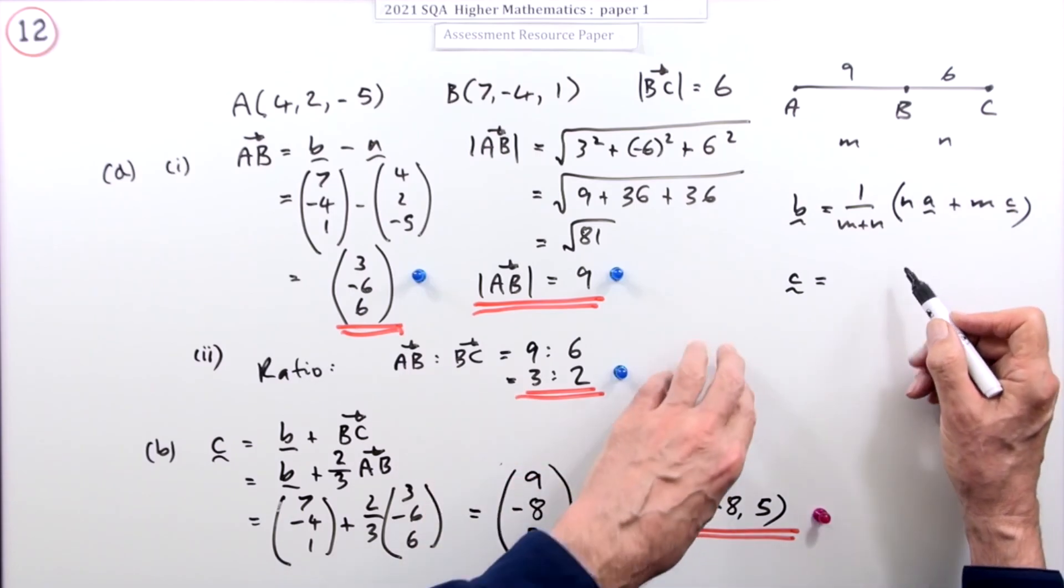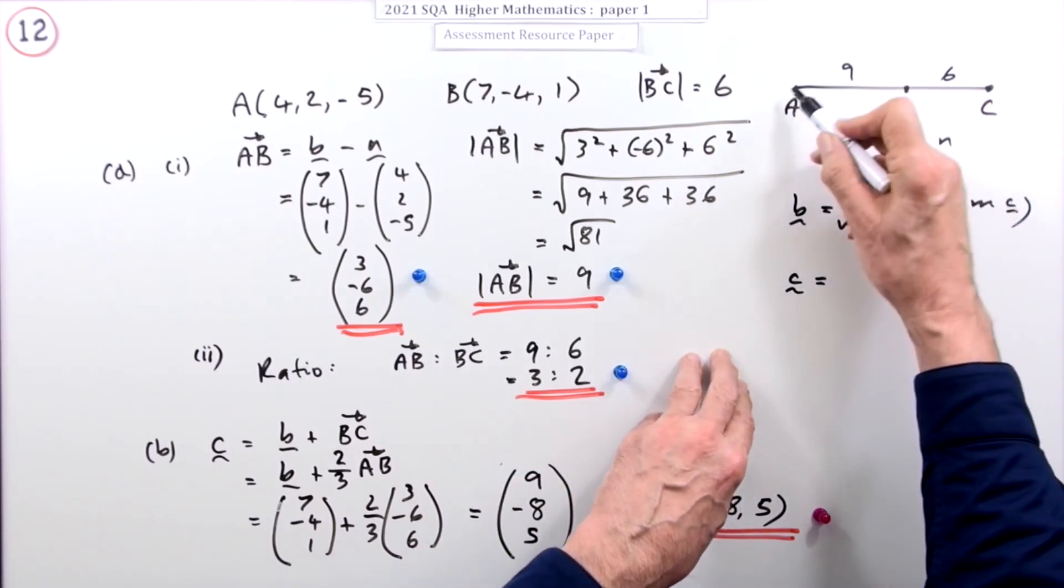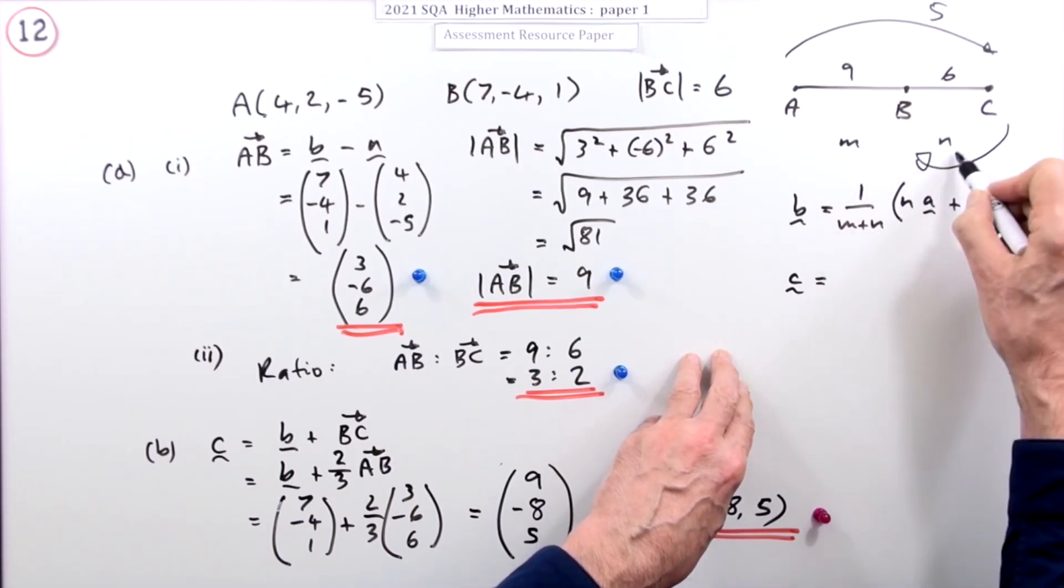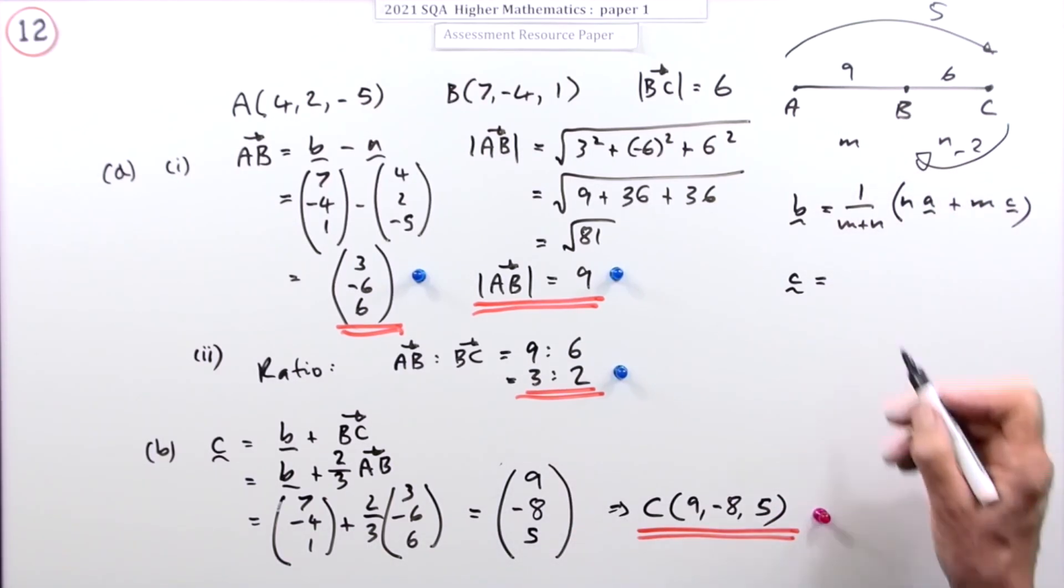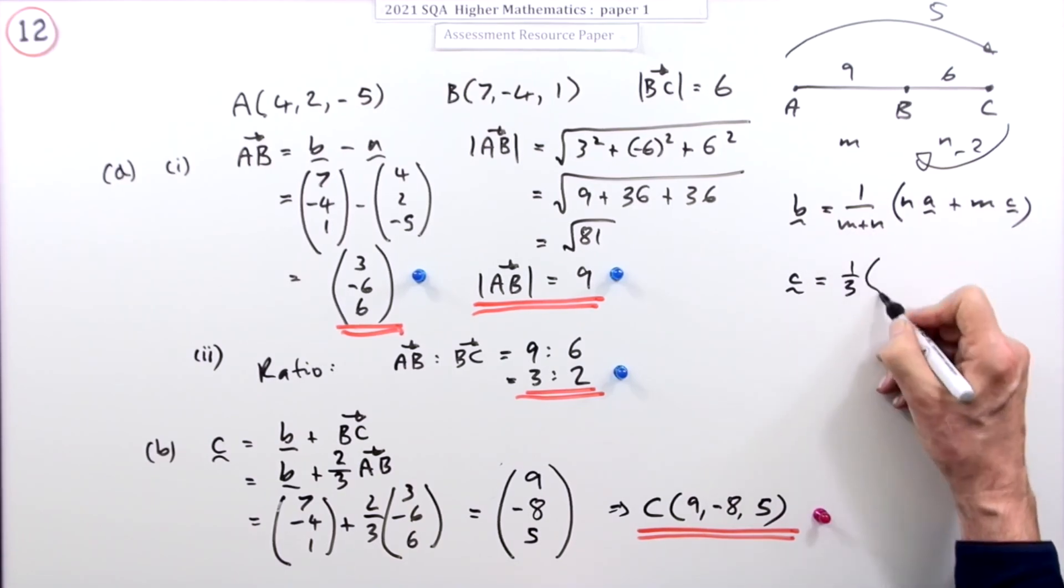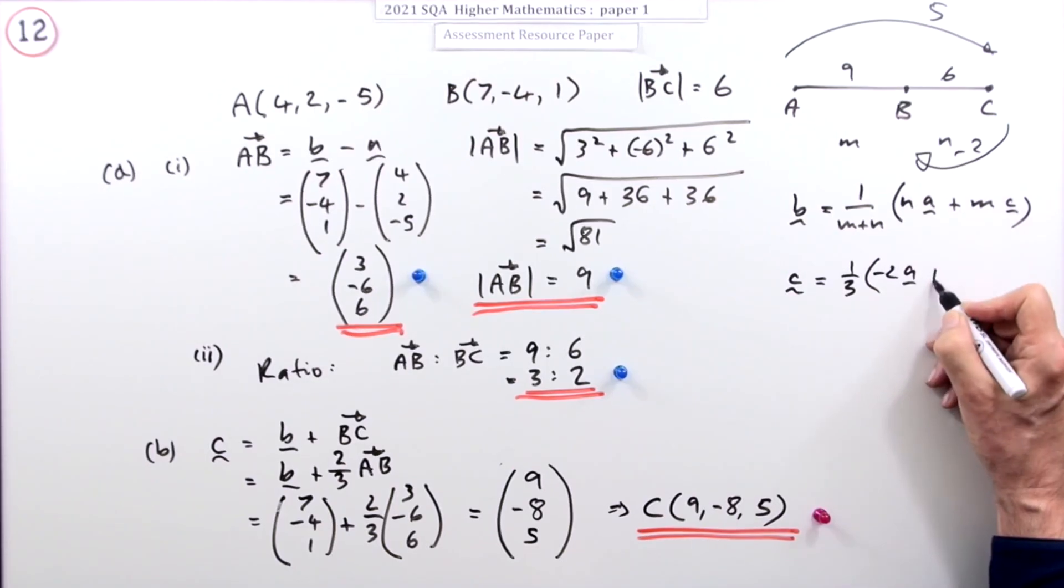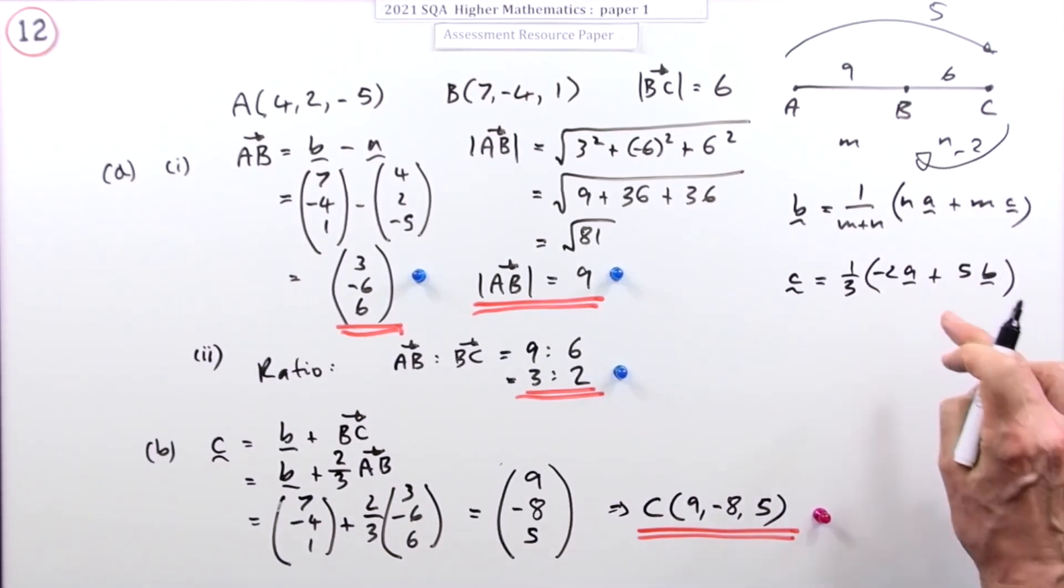You would say C would be, now to get to C since the ratio is 3 to 2, 3 to 2 means you're going five steps forward, two steps back. So if you add them together that's going to be a third, and it's the second one, so it's of negative 2A plus 5B. That would be the section formula. That would end up with this result.